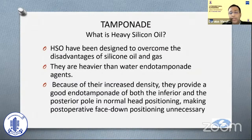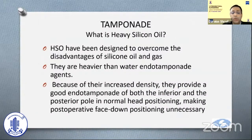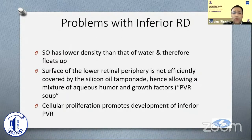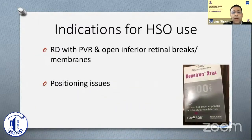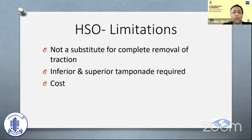Regarding tamponade, heavy silicone oil has been designed to overcome the disadvantages of both silicone oil and gas. It is heavier than water, and because of its increased density it provides good endotamponade to the inferior and posterior pole without requiring prone positioning — even in a normal supine or sitting position it gives good tamponade. The problem with inferior RD is normal silicone oil floats up, so the inferior peripheral retina surface is not well tamponaded, allowing a mixture of aqueous and growth factors — what we call 'PVR soup' — to accumulate and promote inferior PVR and recurrent inferior RD. Heavy oil is therefore a good option for RDs with PVR, open inferior breaks or membranes, or patients who are elderly or children with positioning issues. The downside is cost and availability.